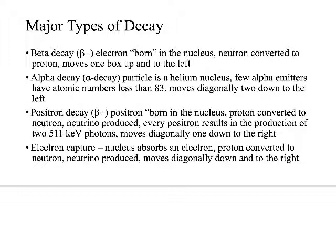In alpha decay, a particle is emitted that is essentially a helium nucleus — two protons and two neutrons — with no electrons. It is just a chunk of matter emitted from the nucleus. These have to be very large elements; there are very few alpha emitters with an atomic mass number less than 83. In this form of decay it moves diagonally down two to the left — almost a parallel shift. It loses a lot of energy but does not help it become that much more stable, so all alpha decays have further radioactive decays that occur after them.